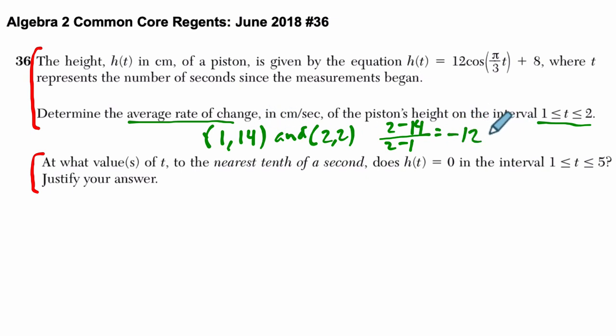They want it in centimeters per second, so that's negative 12 centimeters per every second. Over that interval, we're losing a height of 12 centimeters per second.